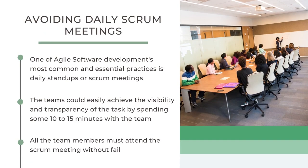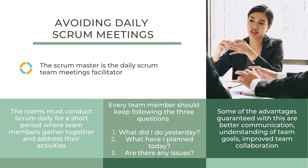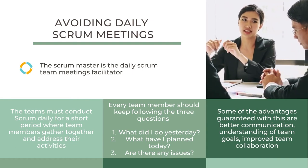The first mistake is avoiding daily Scrum meetings. One of Agile software development's most common and essential practices is daily stand-ups or Scrum meetings. Before starting the day's work, daily stand-ups are conducted where team members gather and address their previous and current tasks. These meetings are highly helpful for better communication among team members and effective collaboration. Teams can easily achieve visibility and transparency of tasks by spending 10 to 15 minutes with the team. All team members must attend the Scrum meeting without fail. The Scrum Master is the daily Scrum meeting facilitator, but most of the time Scrum Masters skip this meeting.